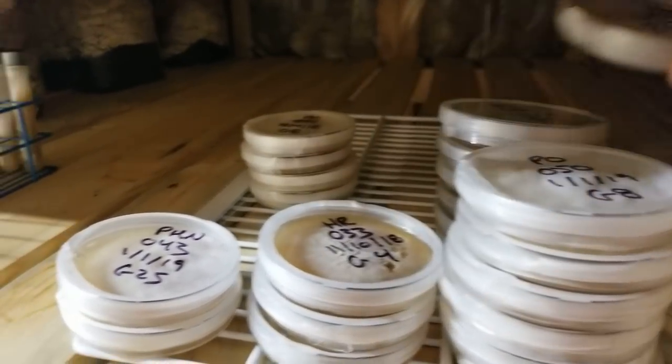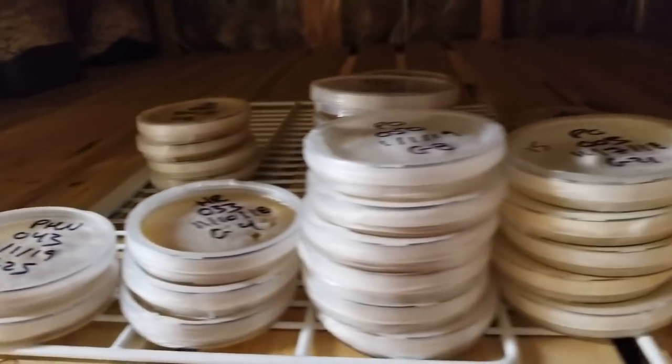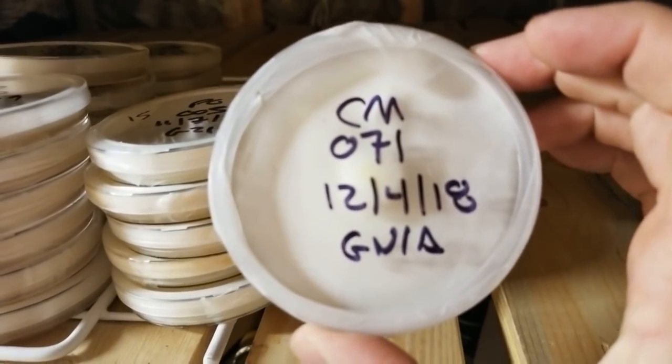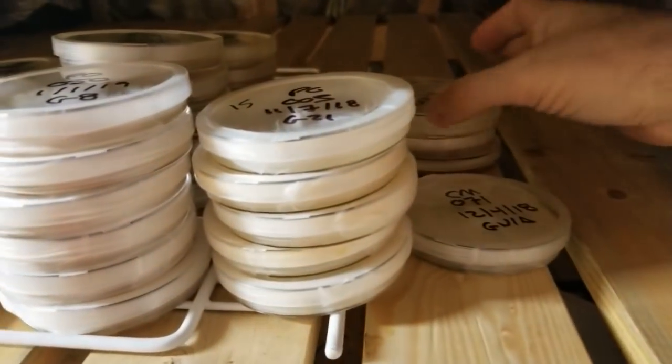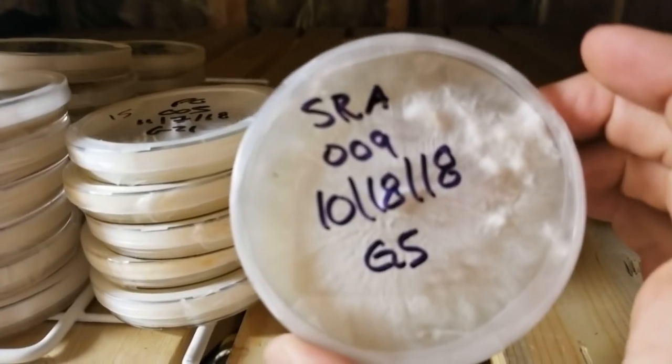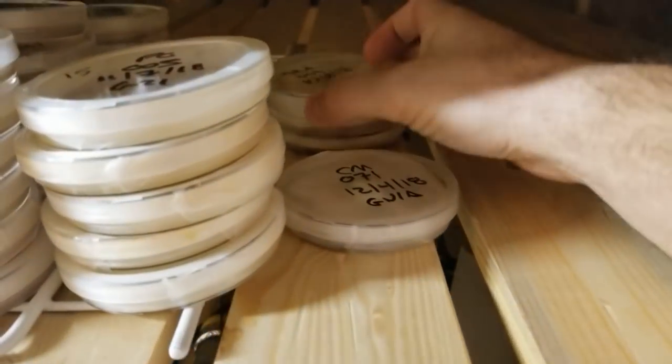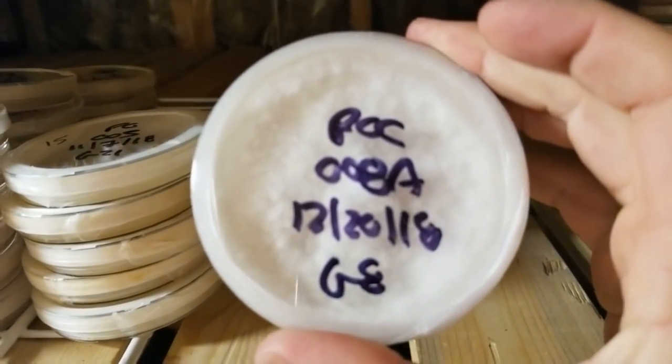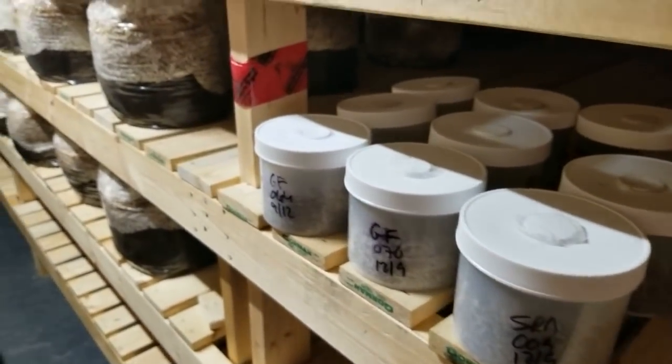Just starting to grow, then we have some plates of cordyceps, king stropharia, and blue oyster right here.